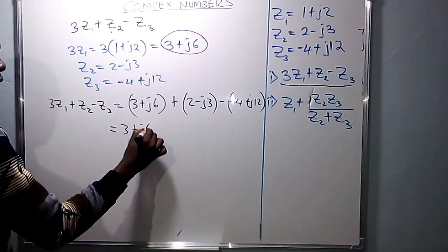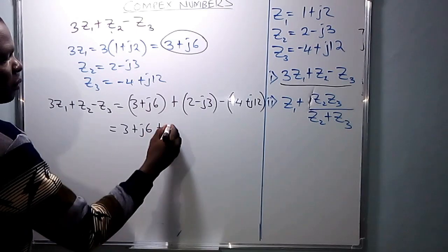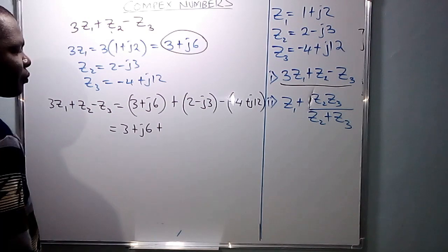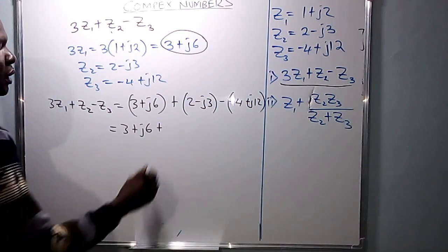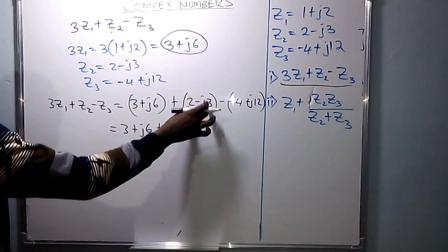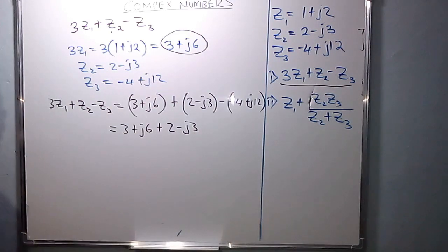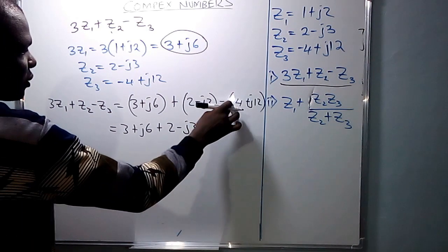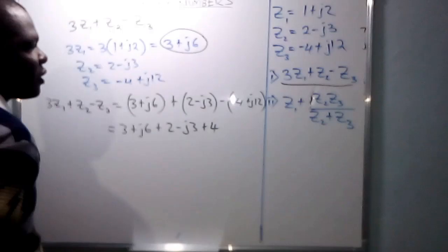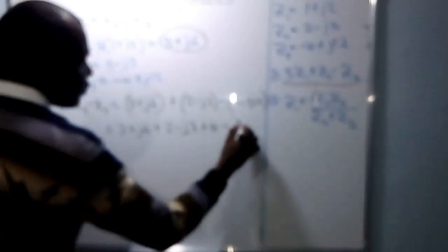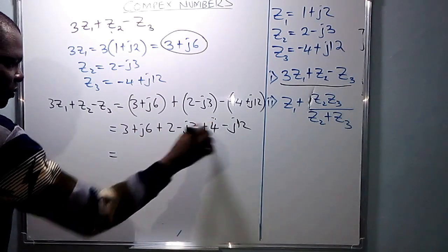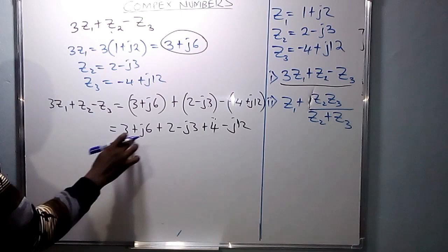After that, open the brackets. The first term is 3 plus j6. The positive sign does not affect the second factor, so we have positive 2 minus j3. For the last term, the negative sign goes inside the bracket: negative into negative 4 gives positive 4, and negative into positive j12 gives negative j12. So we have positive 4 and negative j12.